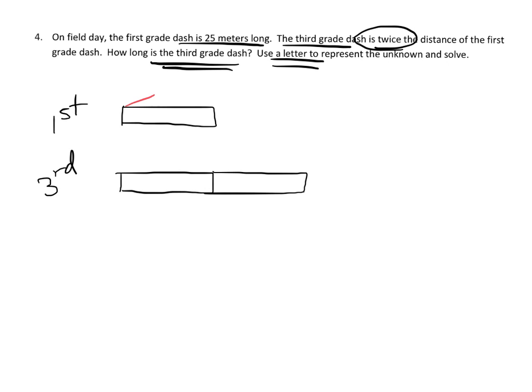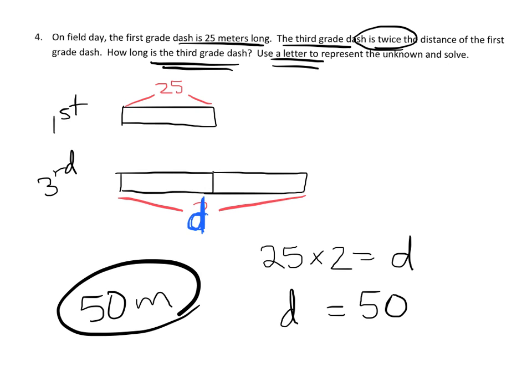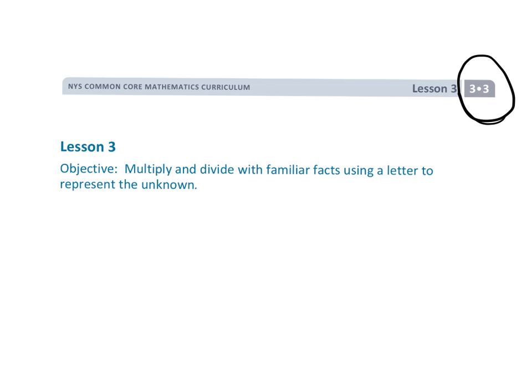Now we know that this is 25 and we want to know this. And so our expression, our equation, would be 25 times 2 equals—now technically I wasn't supposed to use that question mark, really, let's use the letter D to represent dash. So D represents the dash for the third grade. So our equation is 25 times 2 equals D, and then we can solve it. D is equal to 50, and we would say 50 meters. So D is 50 meters long. And that is Grade 3, Module 3, Lesson 3, where we're mushing together multiplication and division and throwing in some algebra.